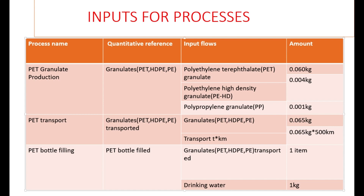Here we have the process name, quantitative reference, input flows, and the amount required. The first flow considered is the granulates. When you process the granulates, we have PET granulate production. So the process name becomes PET granulate production.